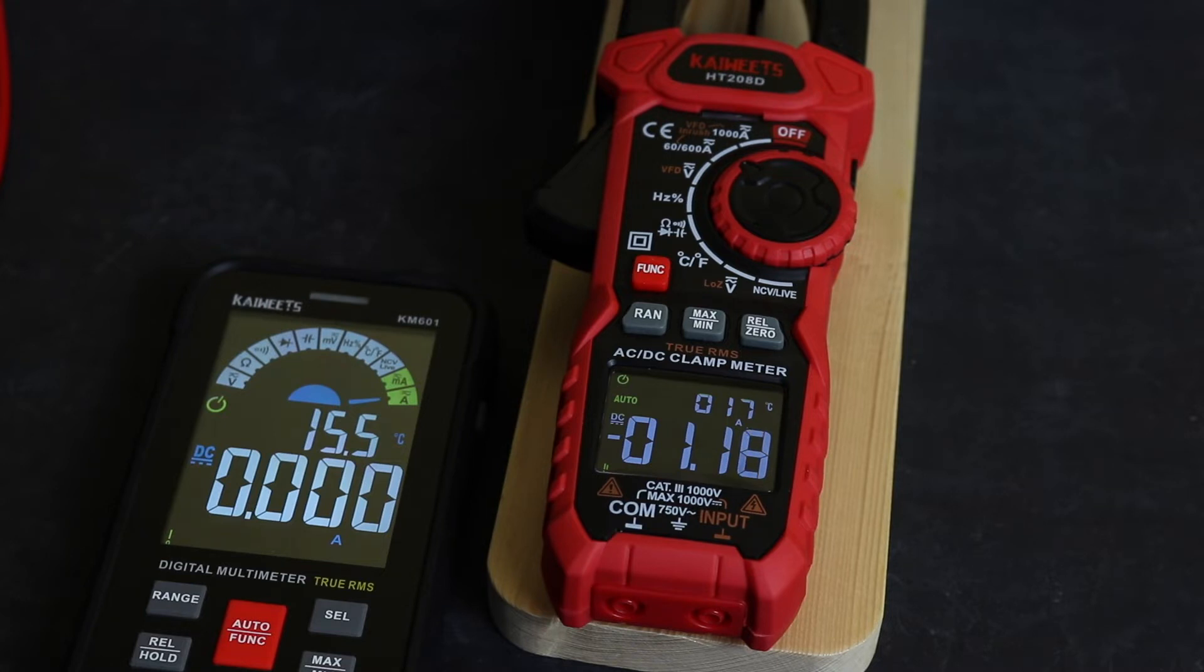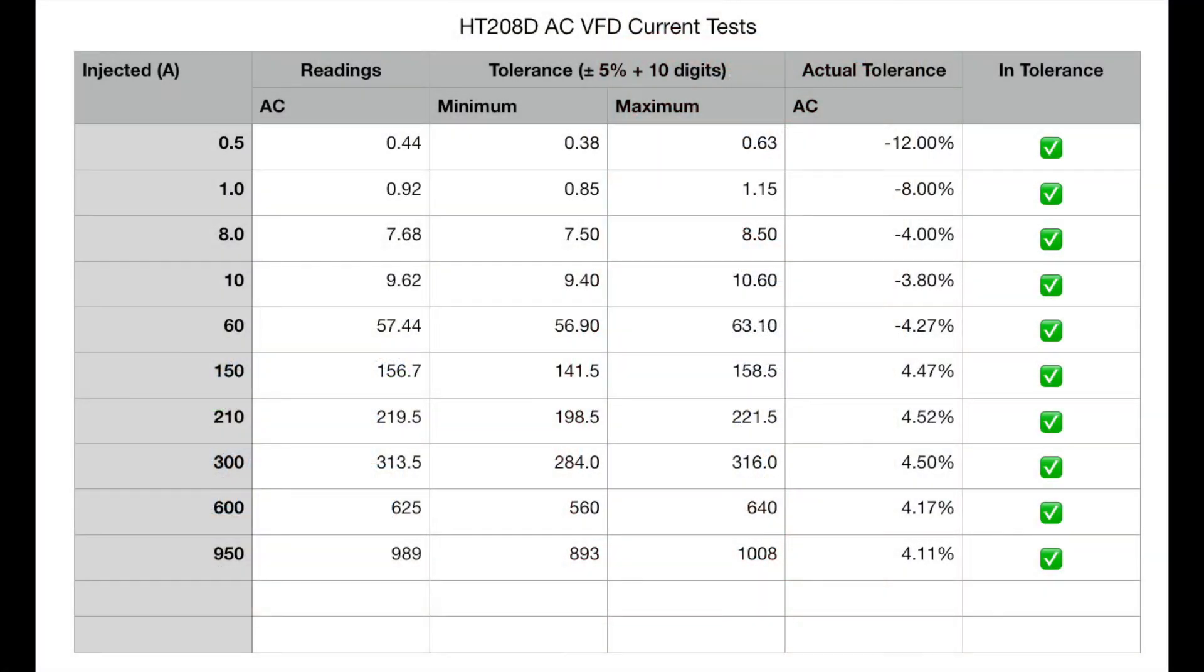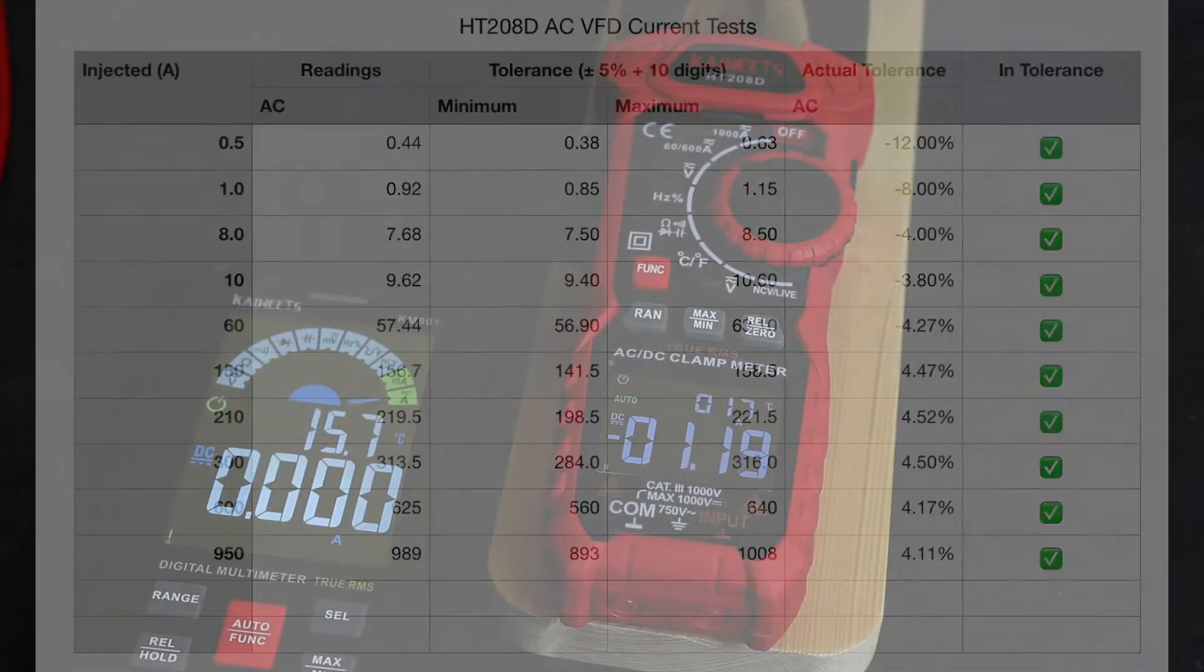However, this instrument also has a VFD mode. If I change it to VFD mode and conduct the same set of measurements, you can see that I'm all in tolerance now. The measurements are either very close to the values obtained during standard AC measurements or just slightly below. However, the tolerance in VFD mode is 5% plus 10 digits, so that's why all those readings are actually within tolerance.